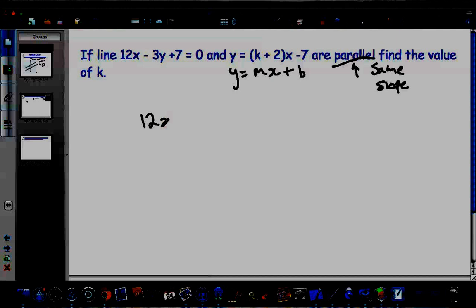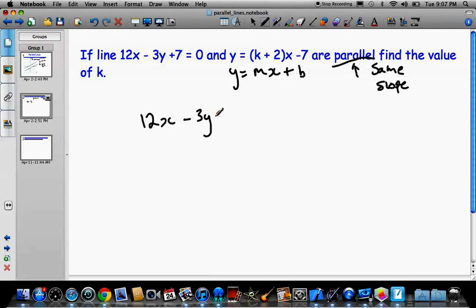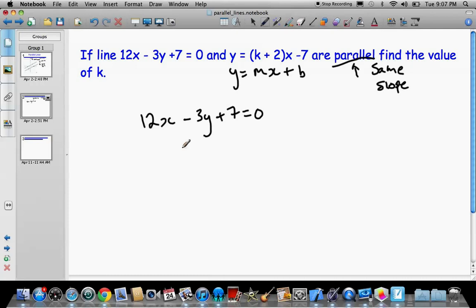This one's already in y equals mx plus b form. And we know that because they're parallel, they have the same slope. So let's change this guy to y equals mx plus b form. So 12x minus 3y plus 7 equals 0. So our goal is get y on one side, everything else on the other. Well, actually, let's just bring the 3y across to the other side. That's probably the easiest thing to do.